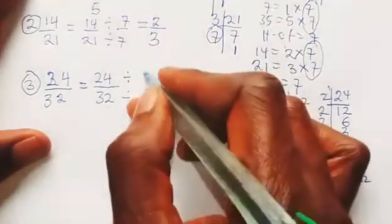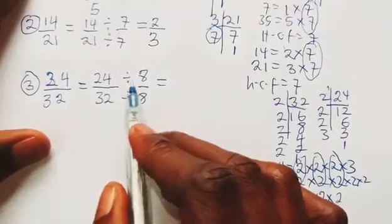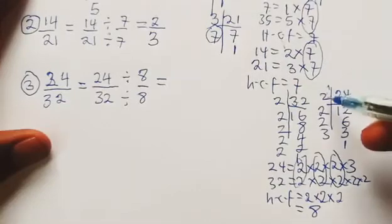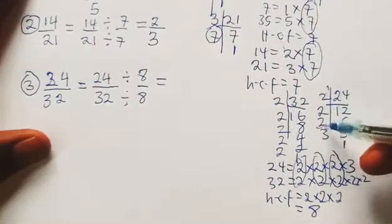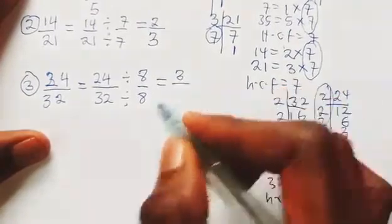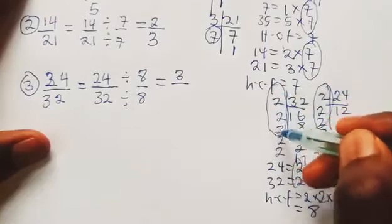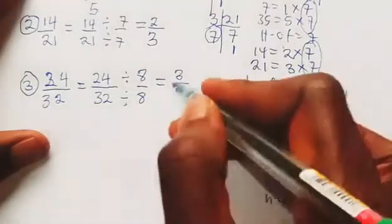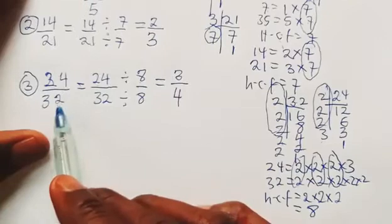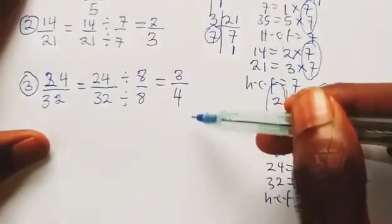We move the HCF of 8 up and use it to divide both numbers. For 24 divided by 8: multiplying out 2 × 2 × 2 = 8, circling that leaves us with 3, so 24 ÷ 8 = 3. For 32 divided by 8: circling the 8, we are left with 2 × 2 = 4. So 24/32 reduces to 3 upon 4 in lowest terms.